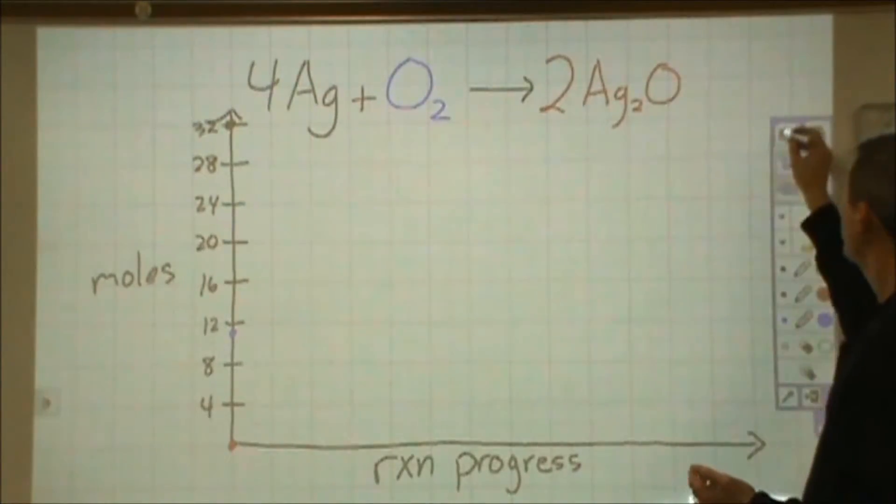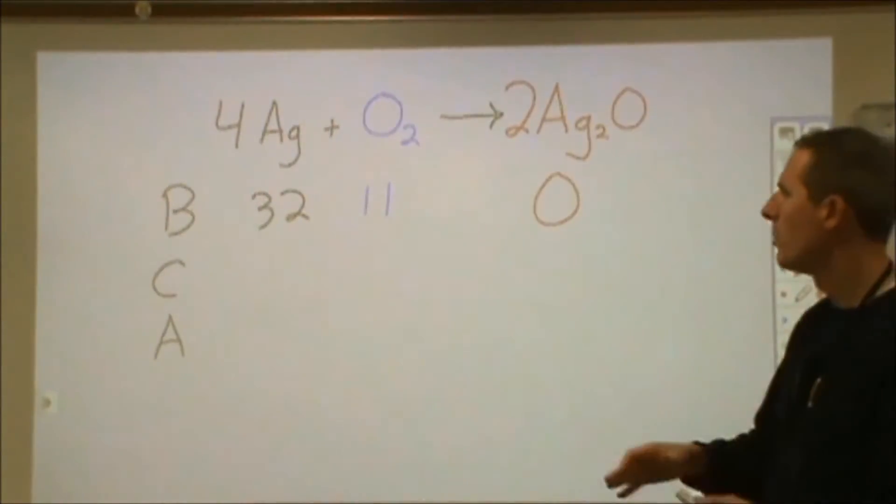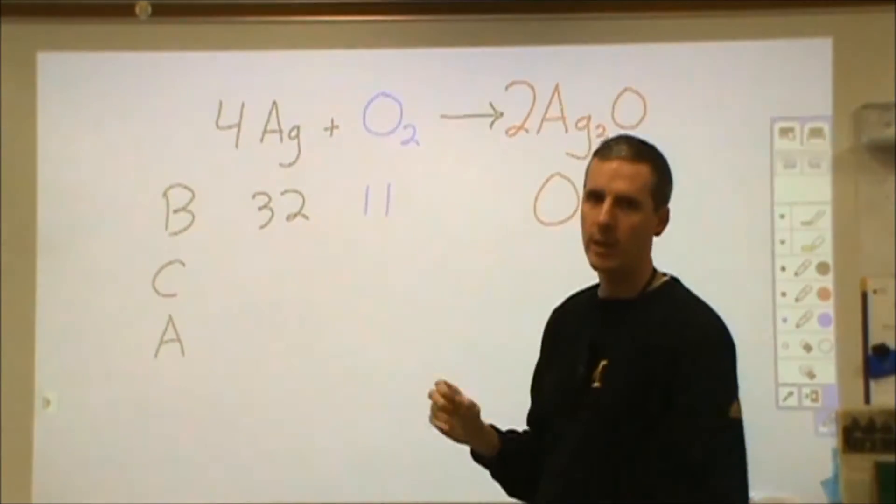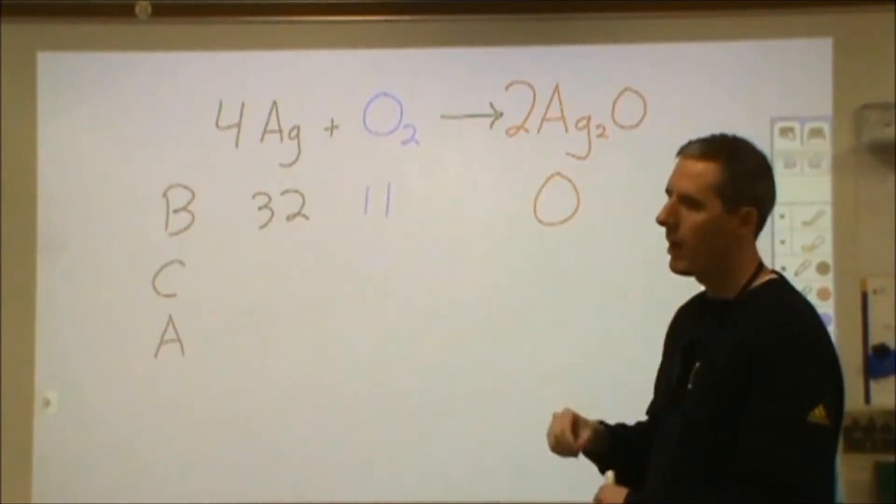So our starting conditions here are as follows. We have 32 moles of silver metal. We are reacting with 11 moles of oxygen gas. We have no product to start.